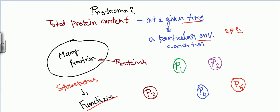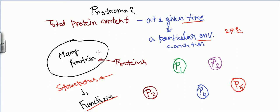If we break the cell, take out all the proteins, isolate and identify them, and determine their structures, we can know the function of each protein — P1, P2, P3, P4, and P5. But knowing individual functions is not enough. It won't tell us how the cell functions as a whole. To understand all cellular machinery, we need a profound understanding of all protein functions and also how these proteins are interacting with each other.